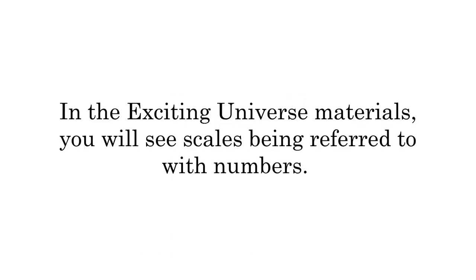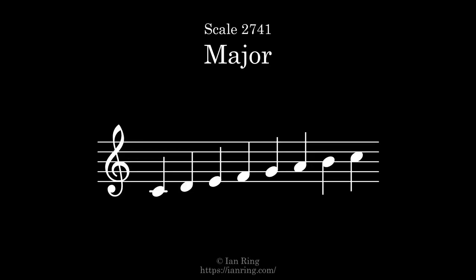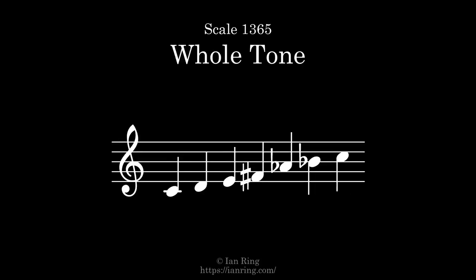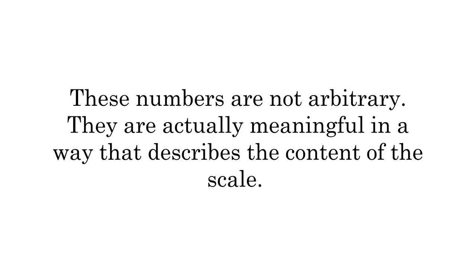In the exciting universe materials, you will see scales being referred to with numbers, such as 2741 for major, 1709 for dorian, and 1365 for the whole tone scale. These numbers are not arbitrary, they are actually meaningful in a way that describes the content of the scale.